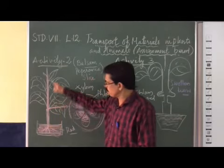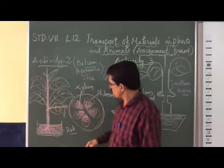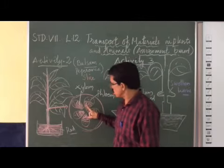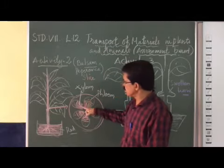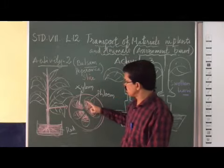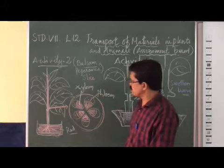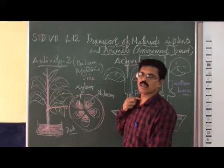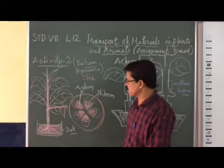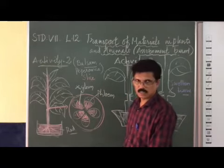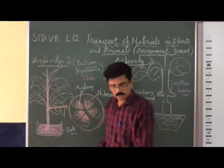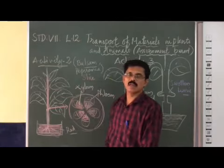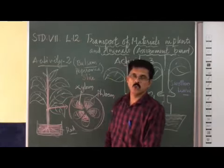Both the xylem and phloem inside the vascular bundle appear red in color because the red-colored water is transported through the xylem. The xylem is more prominently red, which indicates that water absorbed from the soil is transported through the xylem.